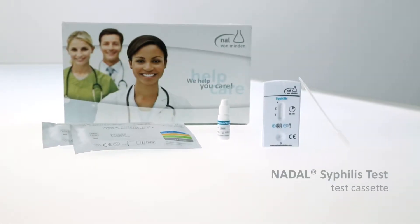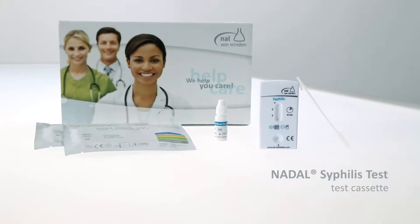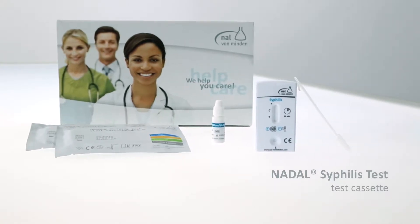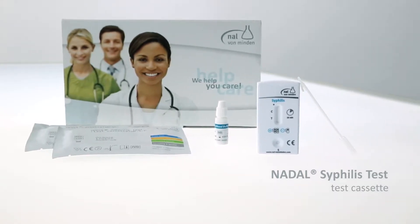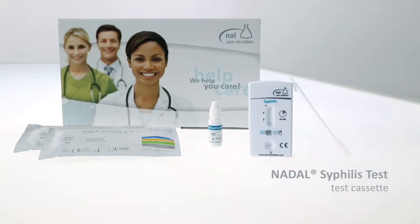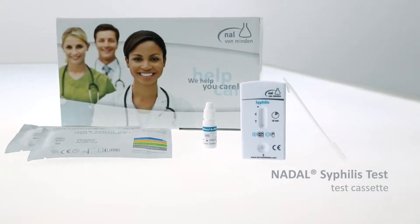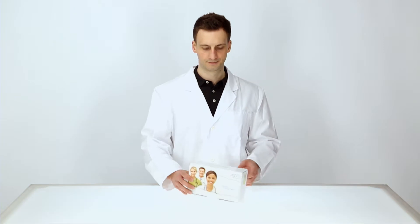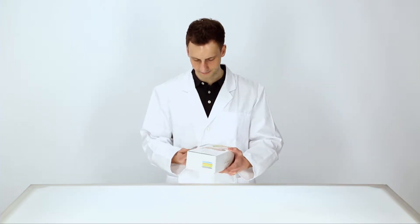The Nadal syphilis test is intended for use in the qualitative, presumptive detection of IgM and IgG antibodies against treponema pallidum in human whole blood, serum, or plasma samples. The test serves as an aid in the diagnosis of syphilis.